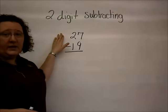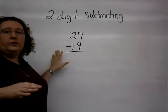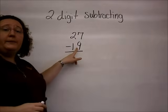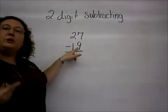I have here 27 minus 19. In our traditional subtraction method, we start in the ones, and we see that the bottom number is bigger. When my bottom number is bigger, I have to borrow.